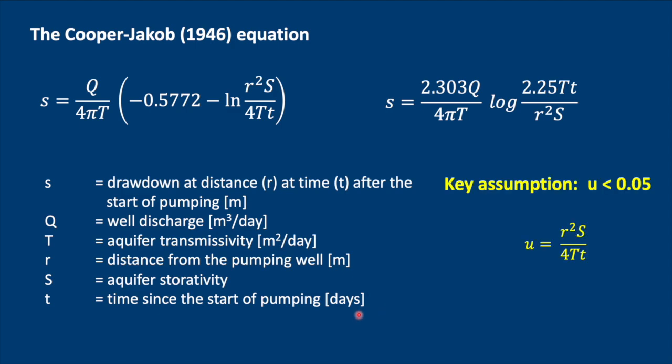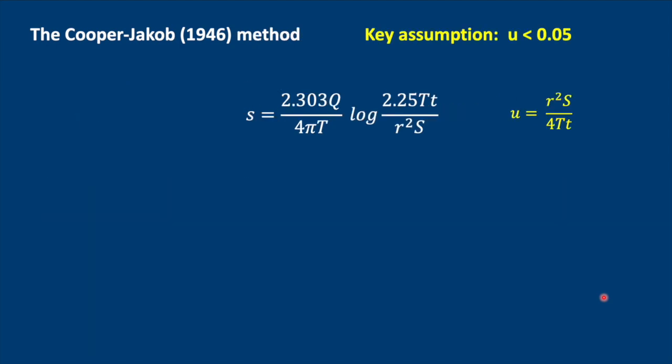Another key thing that we need to consider is that this equation only works when U is small, when it's less than 0.05. So after you've calculated transmissivity and storativity, you need to plug it into this equation to see if it still conforms to the Cooper-Jacob assumptions of a very low U.